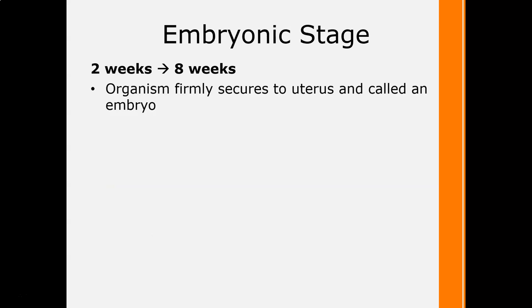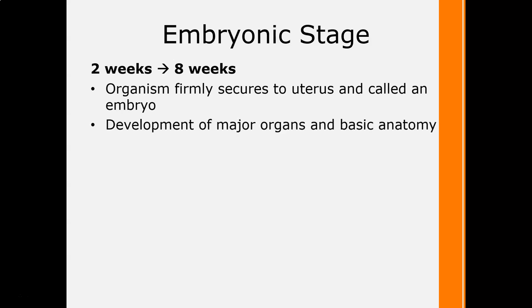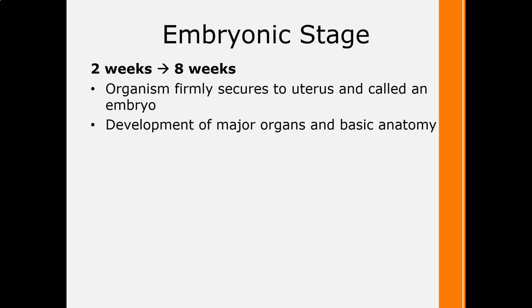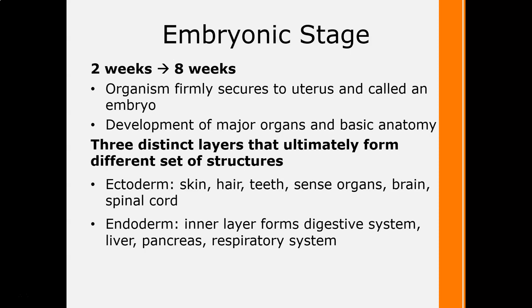From the time of implantation to the end of the eighth week, the organism is in the embryonic stage and is now called an embryo. What's amazing is that major organs such as the brain, spinal cord, and heart are growing first and fast during this time. The three layers are: the ectoderm, which becomes the skin, hair, teeth, sense organs, brain, and spinal cord.